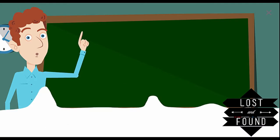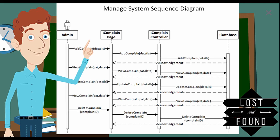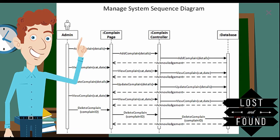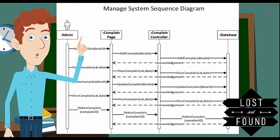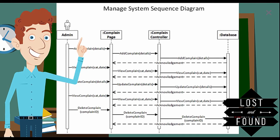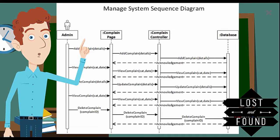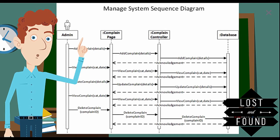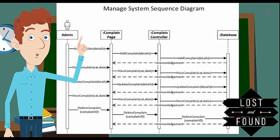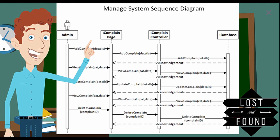To make a sequence diagram, first identify the actor, boundary object, controller, and entity. In our manage system sequence diagram, the actor is the admin or SBG, the boundary object is the complaint page, the controller is the complaint controller, and the entity is the database. The user interacts with the boundary object, the boundary object interacts with the controller, and the controller interacts with the entity.